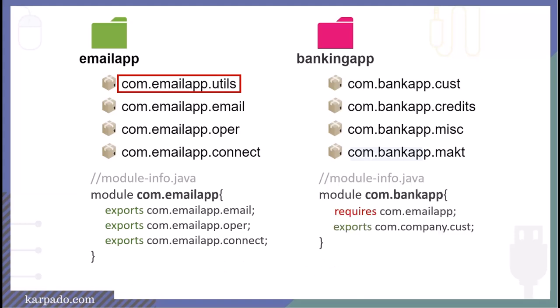Inside BankingApp, we also have module-info.java with a unique name 'com.bankapp', and we specify 'requires com.emailapp'. BankingApp can then import all exported packages from EmailApp, but it won't be able to access the utils package or its classes. So just as packages manage visibility of classes, modules manage visibility of packages and their classes. And this is all it takes to get rid of the problems we discussed.